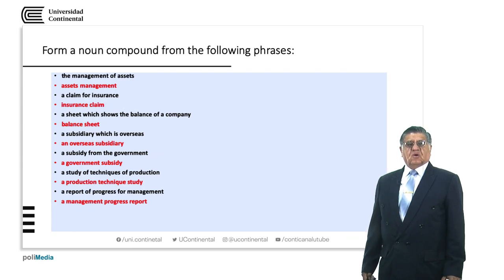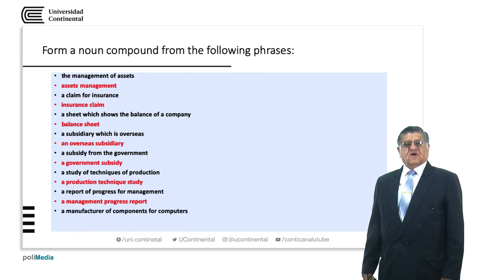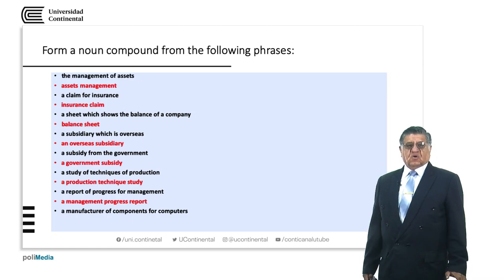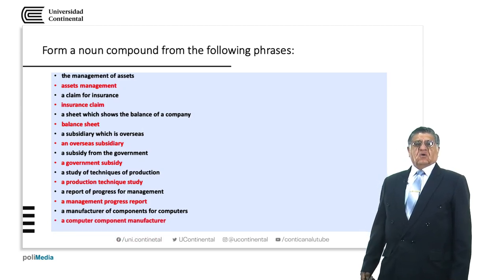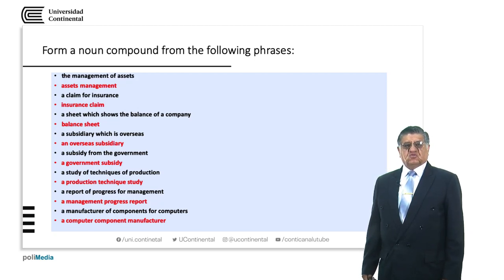We are talking about the progress that management is doing, which is reported. For us, the most important part in this phrase is 'report'. A manufacturer of components for computers — we have a manufacturer that specializes in components, and the components are for computers. The head word in this case is 'manufacturer'. So the noun compound is 'a computer component manufacturer'.